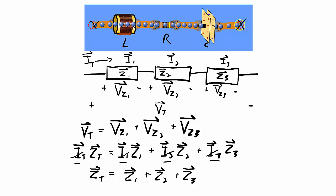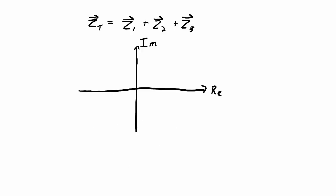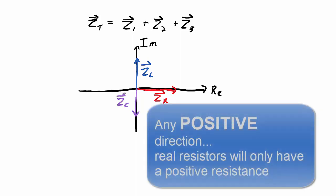It's important to reiterate that these impedances all have a magnitude and a direction, and those magnitudes and directions can be indicated on the real and imaginary plane. Resistors are going to have a magnitude only in the real axis. Inductors will have a magnitude only in the imaginary axis in a positive direction. Capacitors will have a magnitude only in the imaginary axis, but in the negative direction. However, when you have a combination of capacitors, inductors, and resistors, the magnitude could be in any direction.